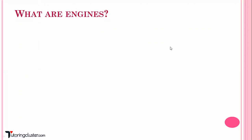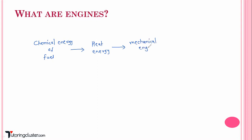Basically, what do you mean by an engine? An engine is a device which converts chemical energy of fuel — first into heat energy, and this heat energy is further converted into mechanical energy. You know all motor automobiles are having an engine. So what is happening inside the engine is that the chemical energy of fuel is first converted into heat energy, and then it is converted into mechanical energy. Our automobile is moving — that means it's mechanical power, it is moving due to mechanical power.